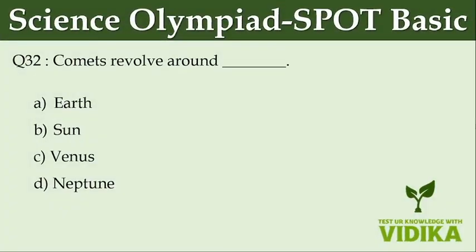Comets revolve around dash. Option A: Earth. Option B: Sun. Option C: Venus. Option D: Neptune.